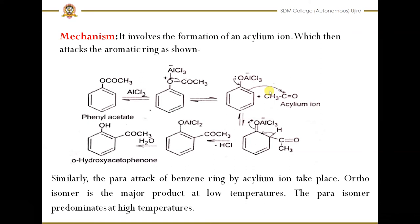Similarly, the para attack of the benzene ring on the acylium ion can also be written. The ortho isomer is the major product at lower temperature, and the para isomer predominates at higher temperature. So at lower temperature we get the ortho product, and at higher temperature we get the para product.